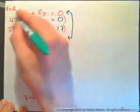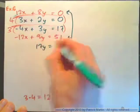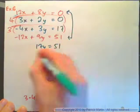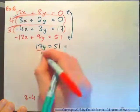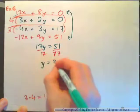And you should end up with your answer, 12x minus 12x is 0. And we have 17y equals 51. So divide by 17. And we have y is 3.